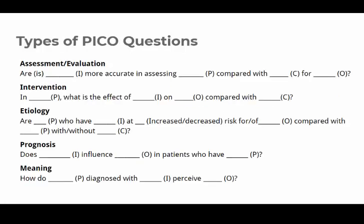The issue you're exploring — intervention, diagnostic tool, etiology, etc. — will determine the type of PICO question you ask. These are some templates you can use. The important thing about knowing the type of question you're asking is that it leads you to knowing the type of research you need. When you're asking a question about interventions, you need to look for intervention studies. Although it may seem obvious when I'm saying it, that point can get lost when you're in the thick of your literature search.